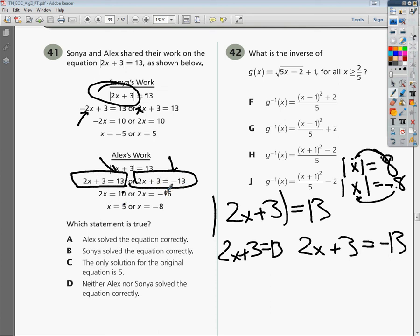Over here, minus 3 gives you negative 16. Divide by 2, it gives you negative 8. So I'm going to check off and say Alex's work is perfectly fine.